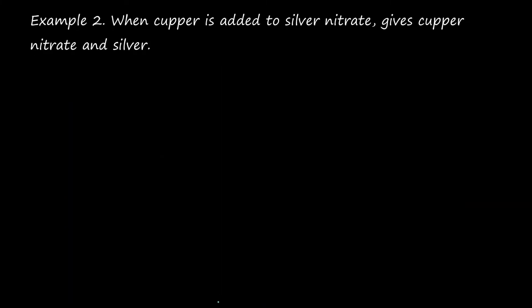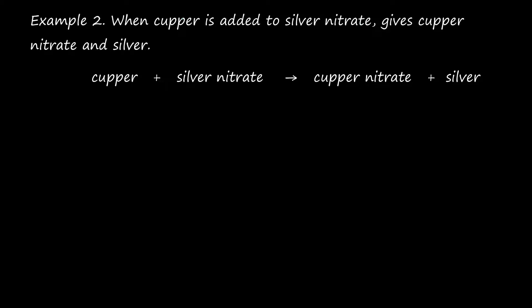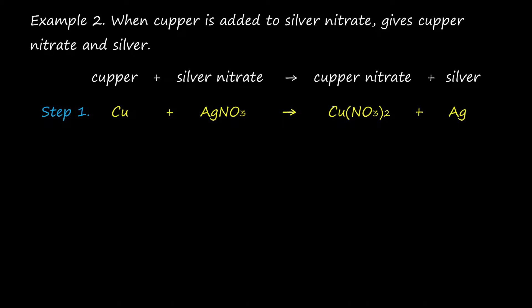Example 2: When copper is added to silver nitrate, it gives copper nitrate and silver. Copper and silver nitrate are on the reactant side; copper nitrate and silver are the products. The first step is to translate the statement into a skeletal equation. Copper is Cu, silver nitrate is AgNO₃, copper nitrate is Cu(NO₃)₂, and silver is Ag.